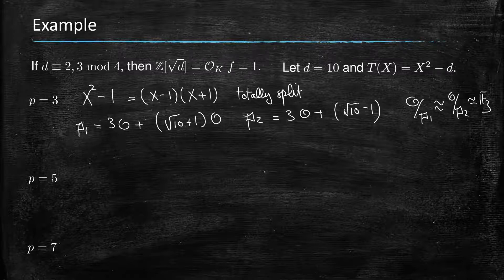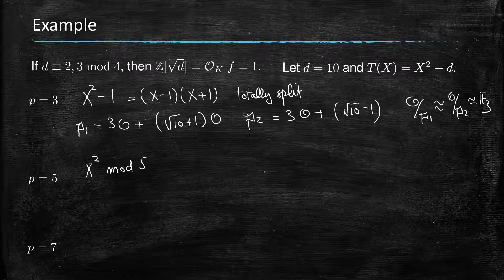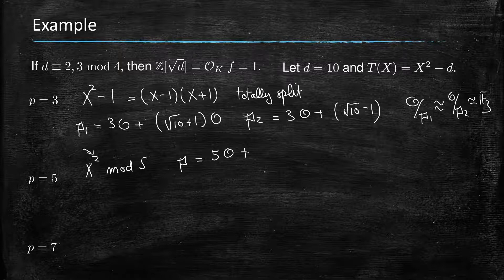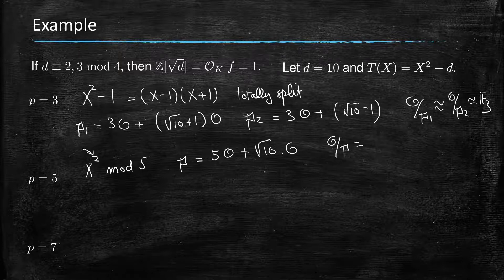Our second case is P equals 5. If we look at T(x), it is congruent to x² modulo 5. So here we are dealing with a ramified case, because we have a power greater than 1. We have only one prime above P = 5, and the formula gives us that prime is of the form 5·O + √10·O. Like the previous case, by the formula sum of E_i * F_i = N, O quotient by P must be F_5, a degree-1 extension over F_5.